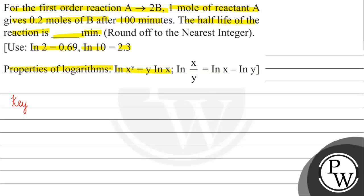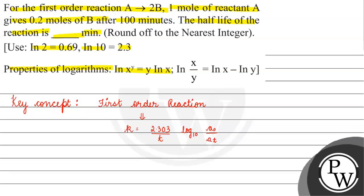So, we have mentioned in the question that this is first order kinetics. The key concept for this question will be first order reaction. For a first order reaction, K is basically equal to 2.303 divided by T, times log base 10 of A0 divided by the concentration of A after time T. A0 is the initial concentration of A, and A(T) is the concentration of A after time T.